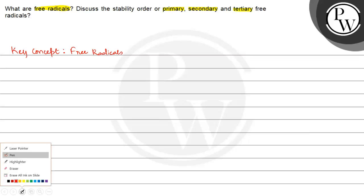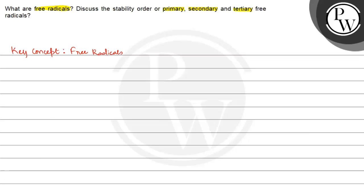So what are free radicals? Free radicals are neutral organic intermediates containing one unpaired electron. Free radicals are neutral organic intermediates containing one unpaired electron.